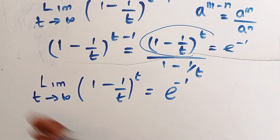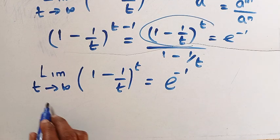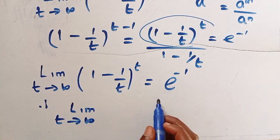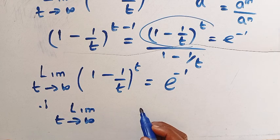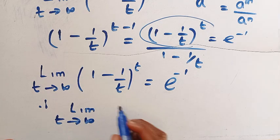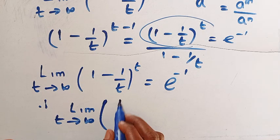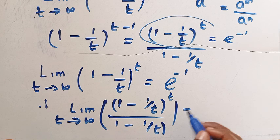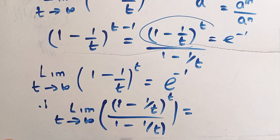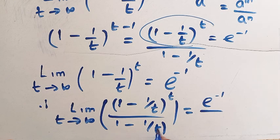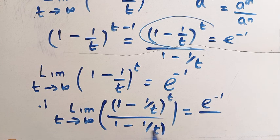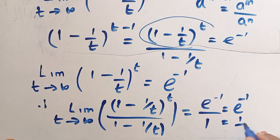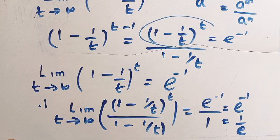Since we have e to the power of minus 1, coming back to the full limit: the numerator becomes e raised to the power minus 1. The denominator is 1 minus 1 over t, and substituting t equals infinity, 1 divided by infinity equals 0, so 1 minus 0 equals 1. Therefore, the result is e raised to the power of minus 1, which we can also write as 1 divided by e. That is the first method.